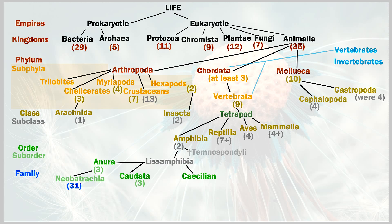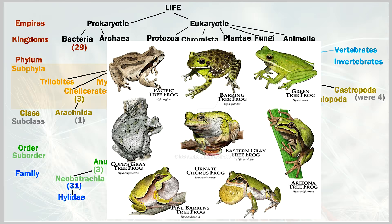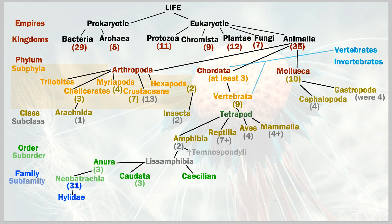Now at the family level, out of those 31 families we're going to branch into one: hylidae. This family contains tree frogs — we start to see the animal get pinned down and all look similar. These are all types of tree frogs that belong to hylidae.